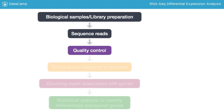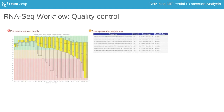After acquiring the FASTQ files, we can start with computational analysis. The first step is to assess the quality of the raw data. At this step, we ensure something didn't go wrong at the sequencing facility and explore the data for contamination, such as vector, adapter, or ribosomal.